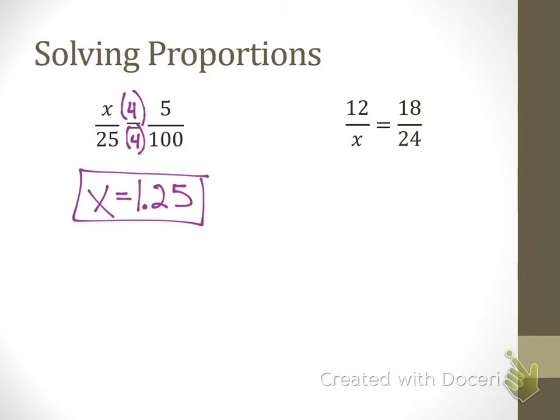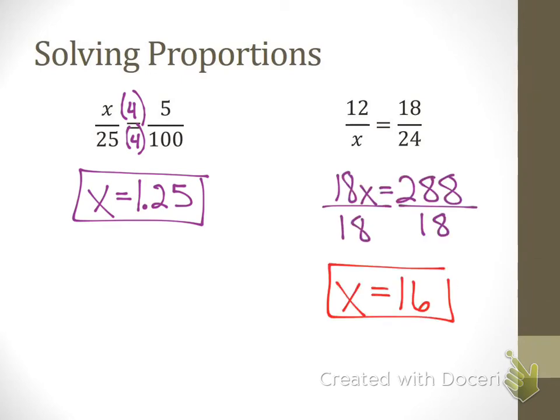All right, have you done the second one yet? Go ahead and do your cross products and solve that one. Okay, so we do our cross products. 18X equals 288. Divide both sides by 18. X is 16. Who got 16? Okay, very good.